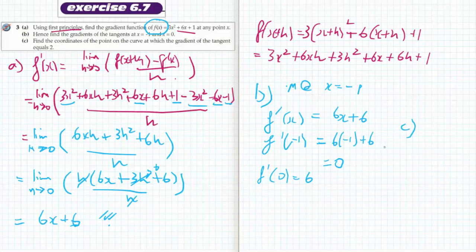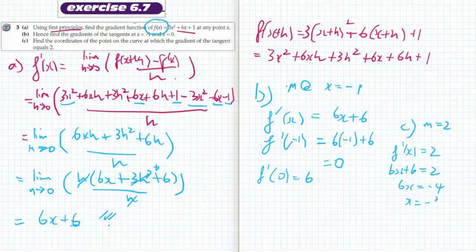Part C: hence find the coordinates of the point on the curve at which the gradient of the tangent equals 2. So f dash of x equals 2, meaning 6x plus 6 equals 2. Therefore 6x equals negative 4, so x equals minus 2 thirds.